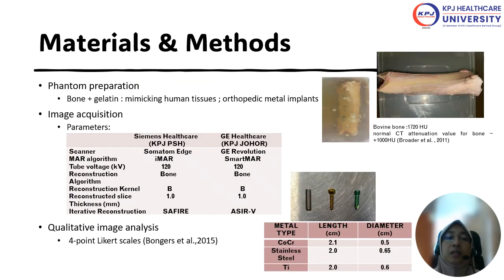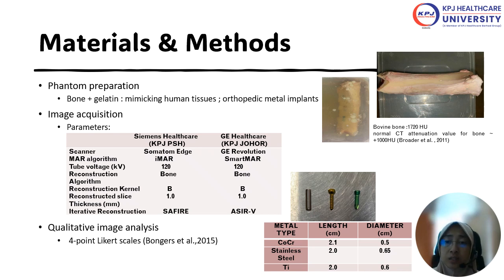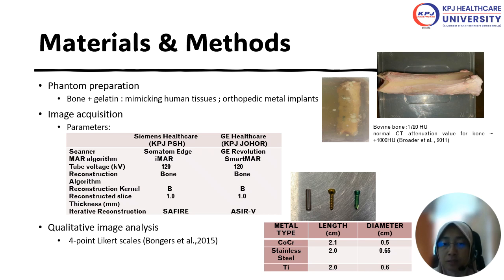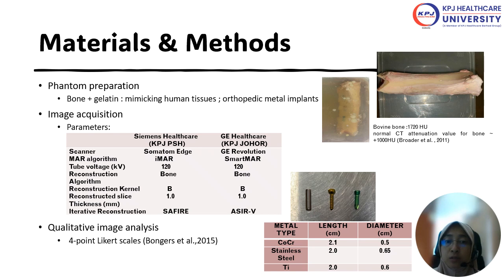For the preparation of the phantoms, it involves bone — specifically bovine bone — which we measured to be in the range of 1,000 HU for the normal CT attenuation number. We then wrapped it with gelatin mimicking human tissues, with embedded orthopedic metal implants composed of three different types: cobalt chromium, stainless steel, and titanium, with the length and diameter as stated. The scanning parameters were kept standard except for the MAR algorithm used, applied across two different institutions.